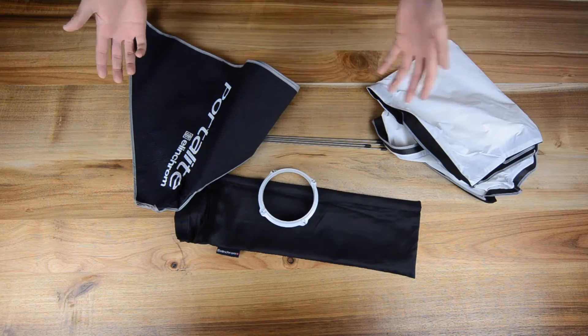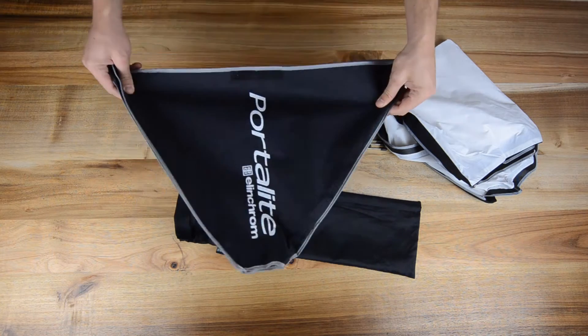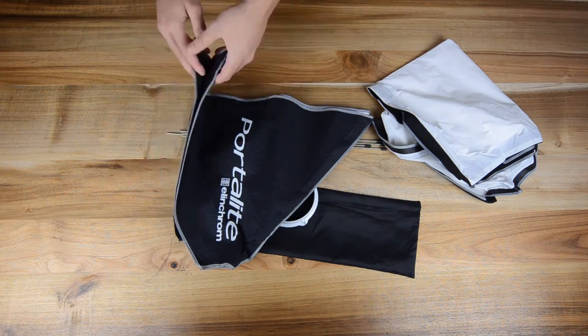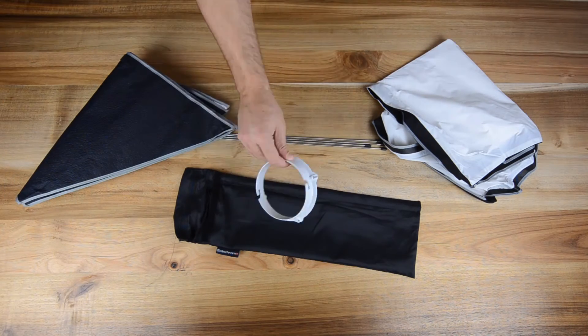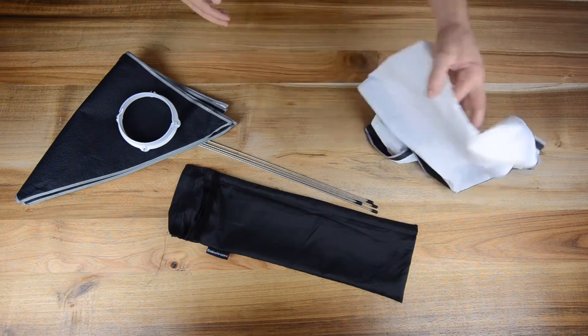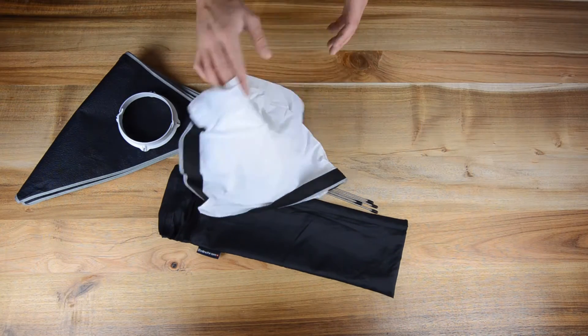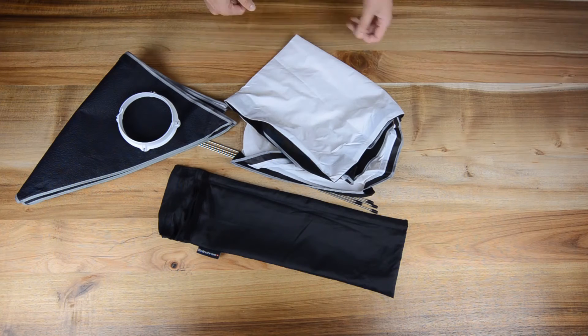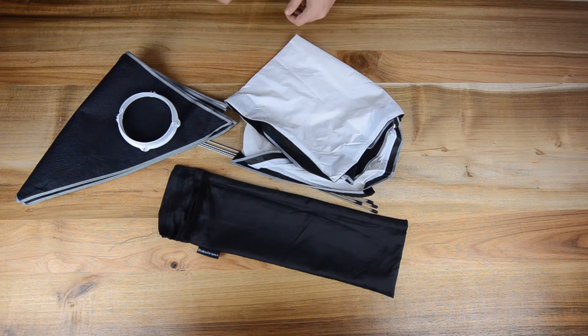Then our first softbox, number four. This is a small medium softbox from Elinchrom. Comes standard with the Elinchrom strobe set with the speed ring for Elinchroms, with a little pouch, four rods and the diffusing material. We've got four of them and sometimes use it on our shoots in studio and outside.